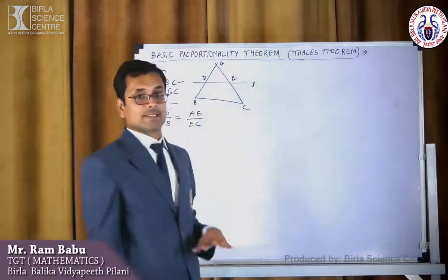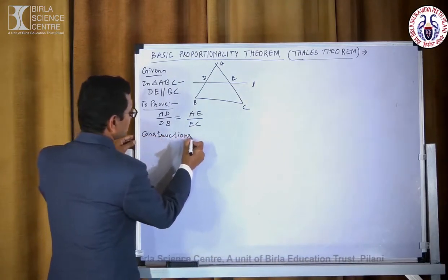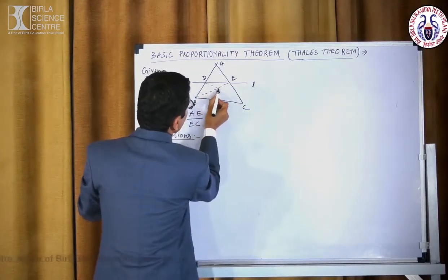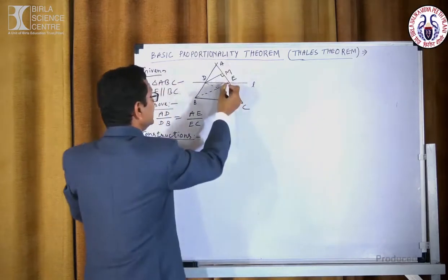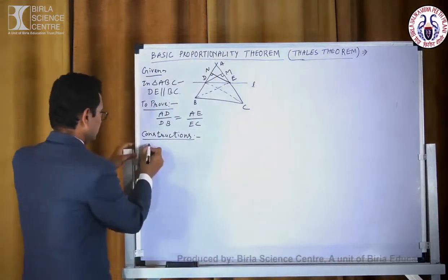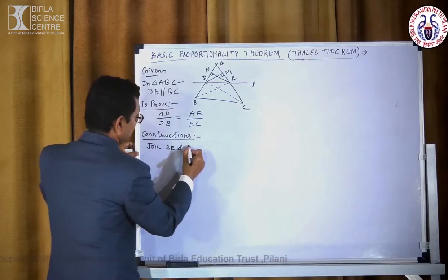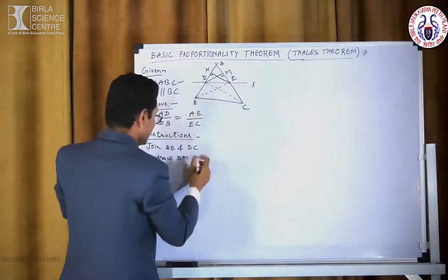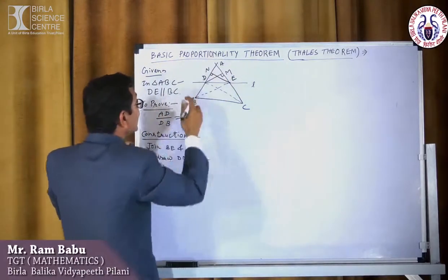Now we will do some construction. Join BE and DC, and draw DM perpendicular to AC and EN perpendicular to AB.